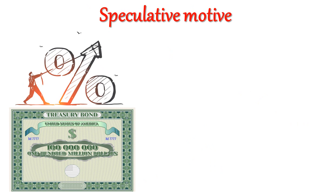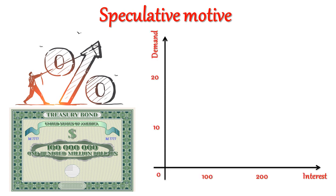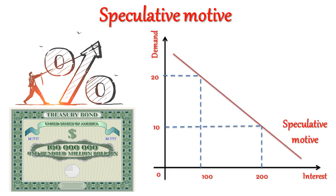Money held for the speculative motive is a liquid store of value that can be invested at an opportune moment in interest-bearing bonds or securities. According to Keynes, speculative demand for money is a decreasing function of the rate of interest. The higher the rate of interest, the lower the speculative demand for money; and the lower the rate of interest, the higher the speculative demand for money. Algebraically, Keynes expressed the speculative demand for money accordingly.